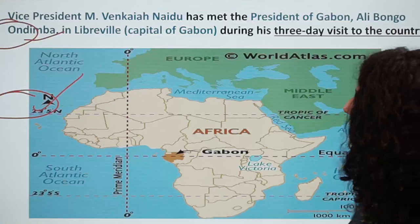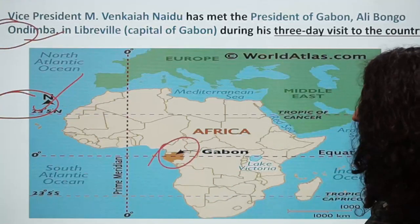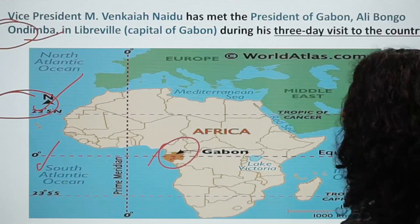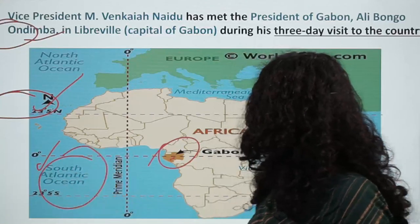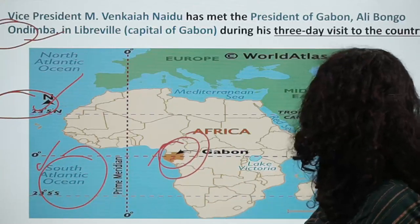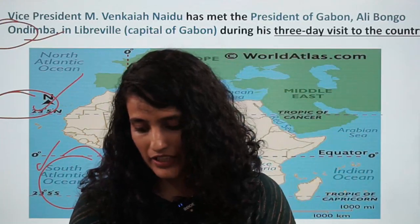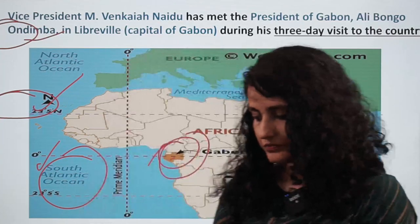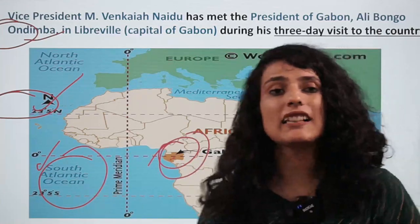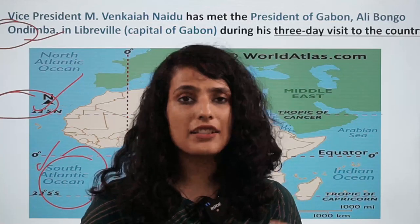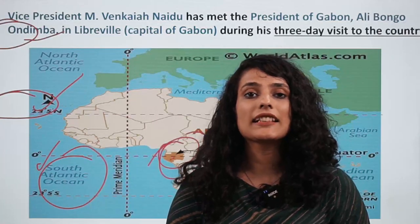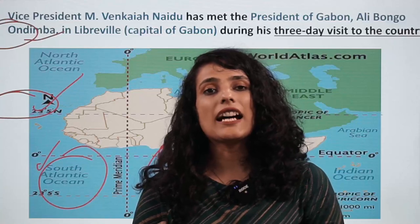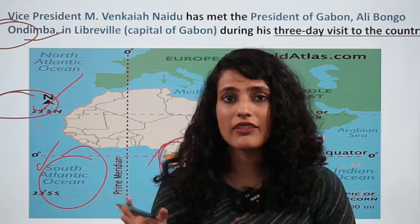You should know that Gabon lies right on the equator, which passes right through the country. It borders the South Atlantic Ocean and is located on the west coast of Central Africa. Gabon is very important for India because it has one of the largest reserves of manganese in the world, which is a rare earth metal, and India is highly deficient in rare earth metal reserves.